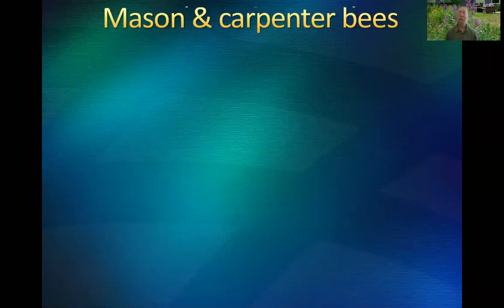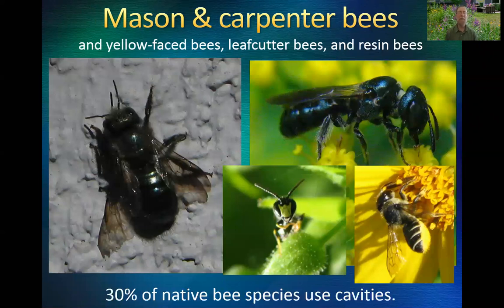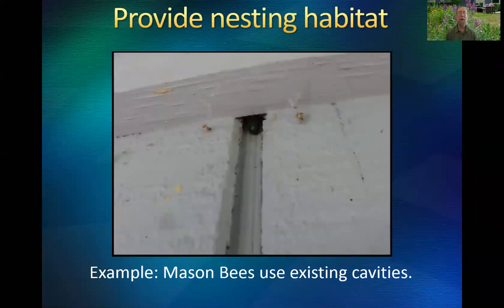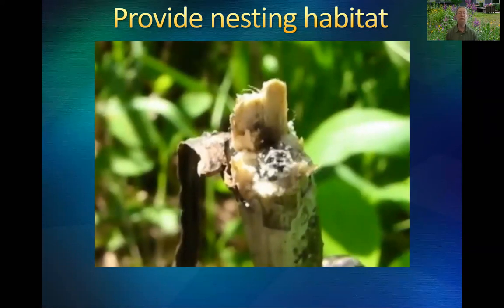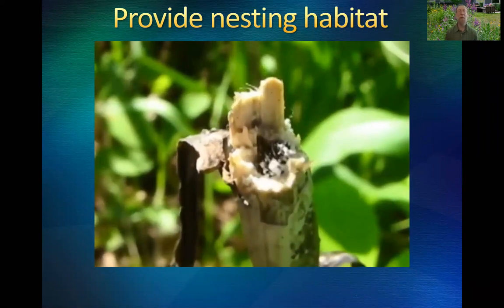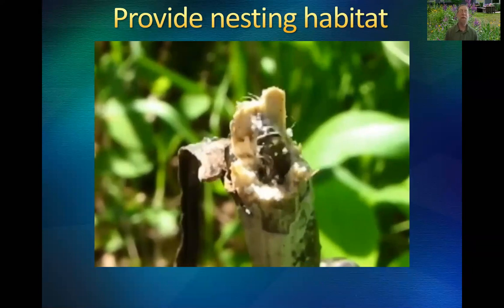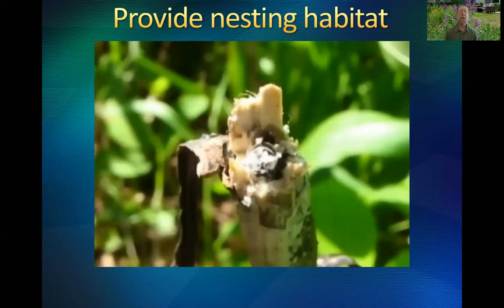The other group of Minnesota bees includes mason and carpenter bees, yellow-faced bees, leaf-cutter bees, resin bees, and others — they are cavity nesters. Instead of excavating a hole in the ground, they'll use existing cavities or make their own in wood or plant stems. Mason bees frequently use existing cavities like gaps in house siding, bee hotels, or hollow spots in trees hammered out by woodpeckers. Carpenter bees and resin bees use dead plant stems, excavating the center out to lay their eggs and provision the nest inside that hollow stem.